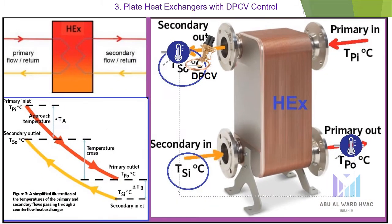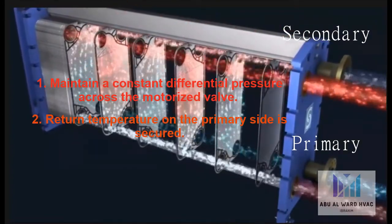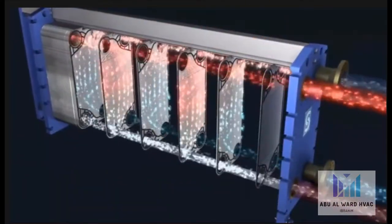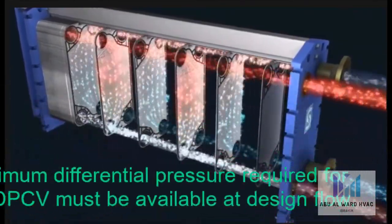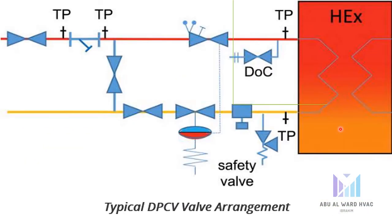For plate heat exchangers with DPCV control, the primary function is to control the water inlet temperature on the secondary side to secure the water outlet temperature on the primary side. A DRV with sensor is placed at the heat exchanger; the differential pressure is stabilized in every section of the system, so the motorized valve reacts only on the temperature signal without compensating for pressure fluctuations. Benefits: maintains constant differential pressure across the motorized valve; return pressure on the primary side is secured; secondary pump switches off when there is no demand. Consideration: minimum differential pressure required for the DPCV must be available at design flow.